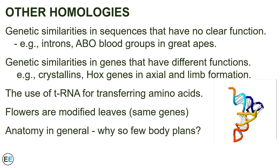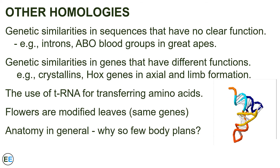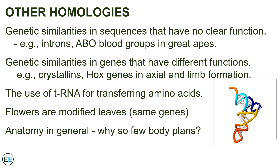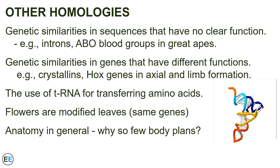The Hox genes involved in axial and limb formation have sequences that are extremely similar to one another — a major reason for this is because they are descended from ancestor genes. tRNA is used by most organisms for transferring amino acids, but only the very distal portions have a direct function. A variety of different shapes of RNA should be able to provide the same function, but the fact that everything uses the same shaped tRNAs is because they inherited it from an ancient ancestor. Despite their very different function, the anatomy of flowers indicates that they are just modified leaves produced by many of the same genes — flowers evolved from leaves, so their similarities reflect that history.